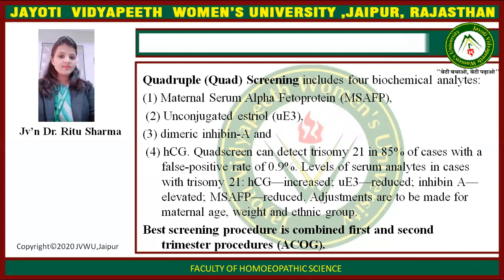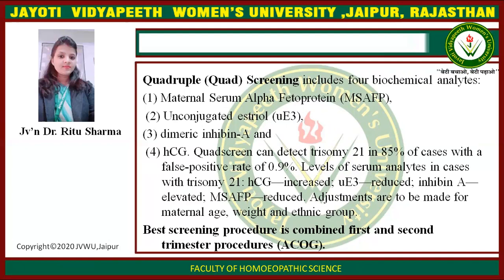Quadruple screening includes four biochemical analytes: first, maternal serum alpha-fetoprotein; second, unconjugated estriol; third, dimeric inhibin A; and fourth, hCG. The quad screen can detect trisomy 21 in 85% of cases with a false positive rate of 0.9%. In trisomy 21: hCG is increased, unconjugated estriol (E3) is reduced, inhibin A is elevated, and maternal serum alpha-fetoprotein is reduced. Adjustments are made for maternal age, weight, and ethnic group.